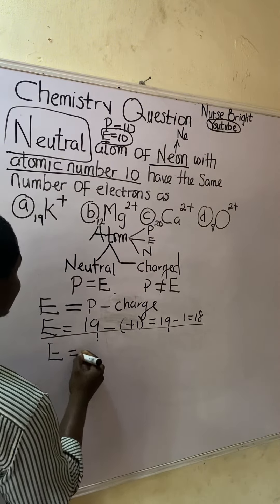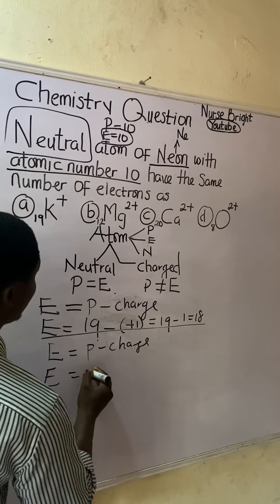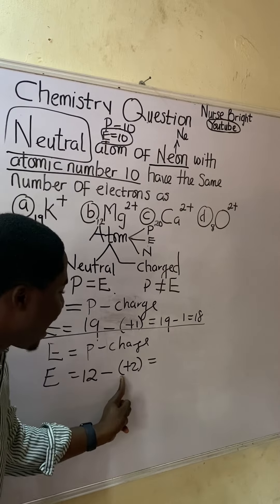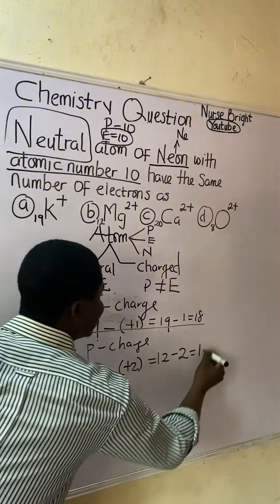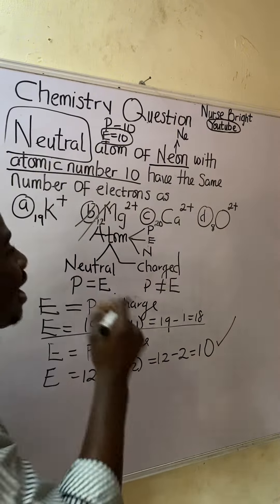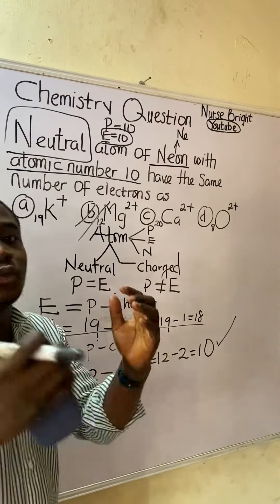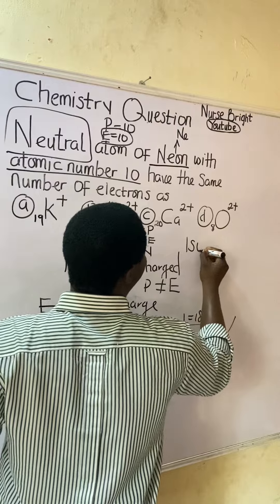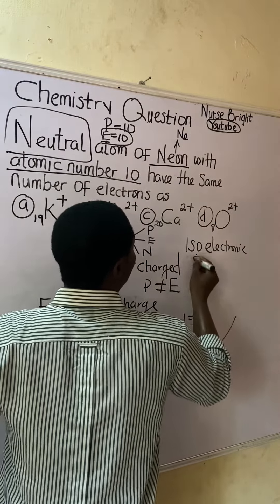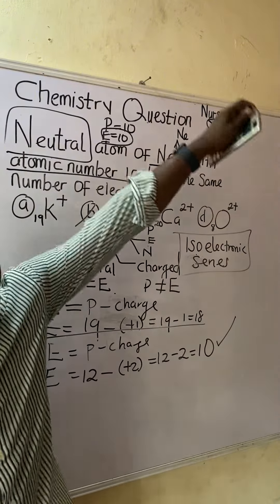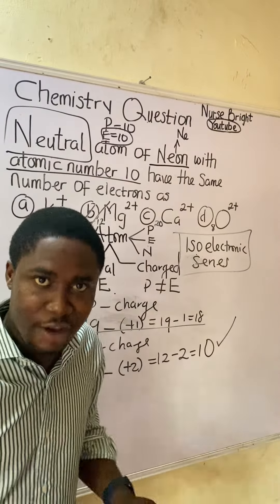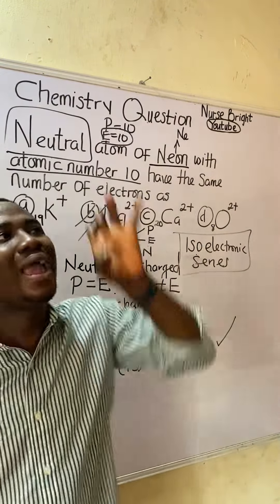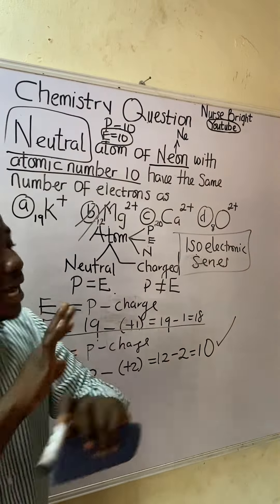For option B, magnesium (Mg²⁺): electron number = proton number − charge = 12 − (+2) = 12 − 2 = 10. This is the answer! Magnesium ion has the same 10 electrons as neon. When atoms have the same number of electrons they are regarded as isoelectronic — this is called an isoelectronic series. It is different from isotopes. Magnesium ion and neon are isoelectronic because they both have 10 electrons.